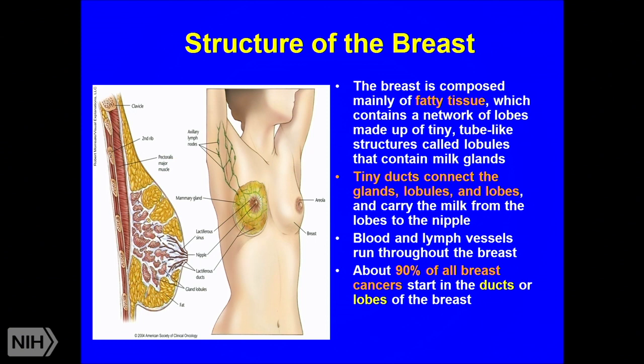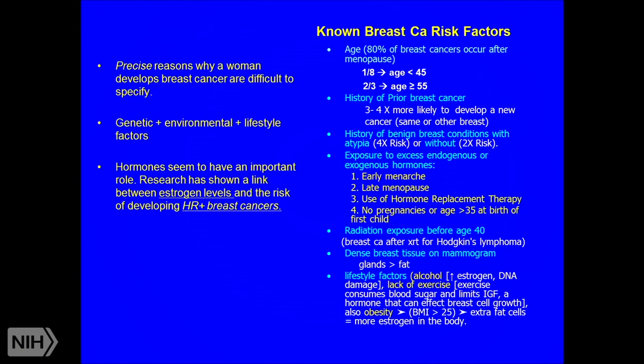The precise reasons why a particular woman will develop breast cancer are difficult to specify, but we know it's a combination of genetic, environmental, and lifestyle factors. Hormones have an important role, specifically in hormone receptor-positive breast cancer. Some known risk factors include age — the majority of breast cancers arise in postmenopausal women.